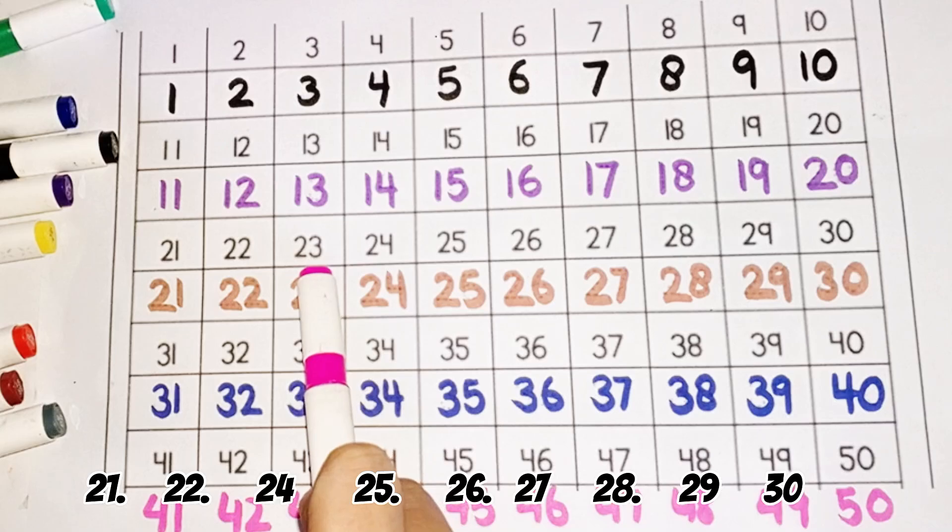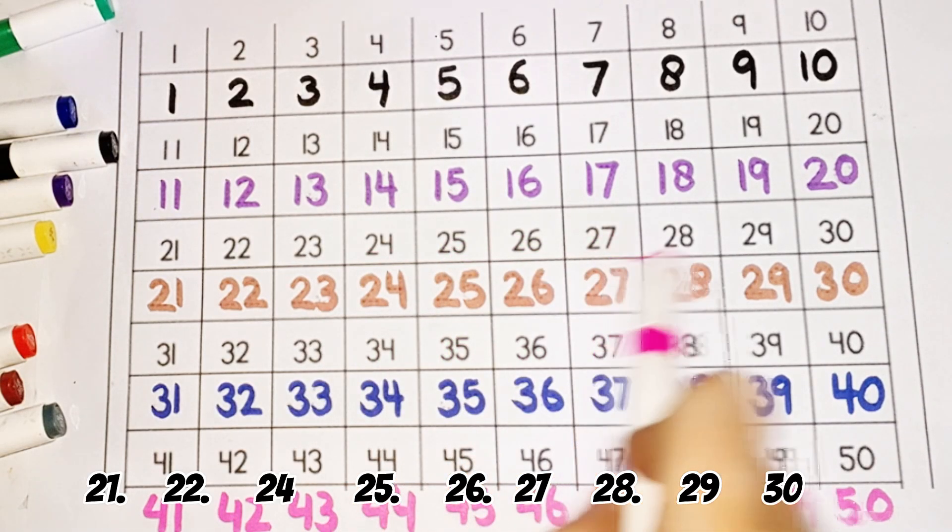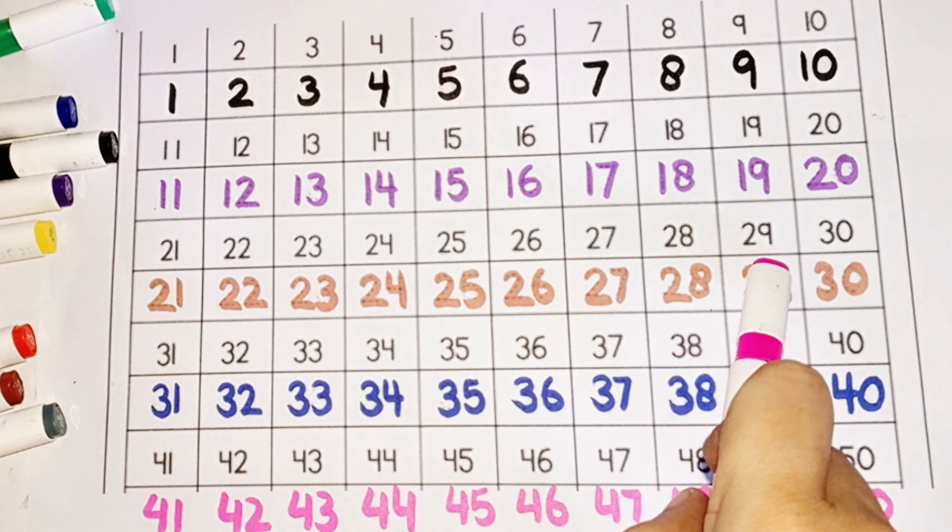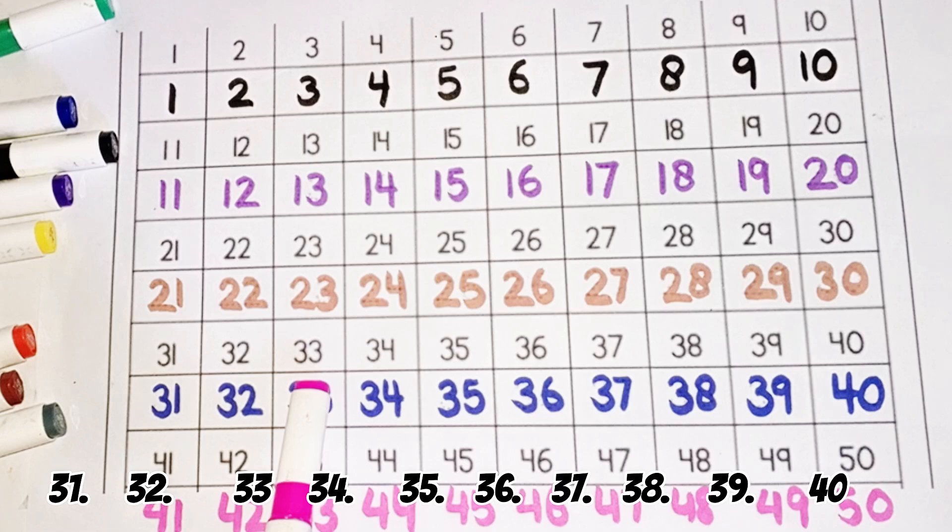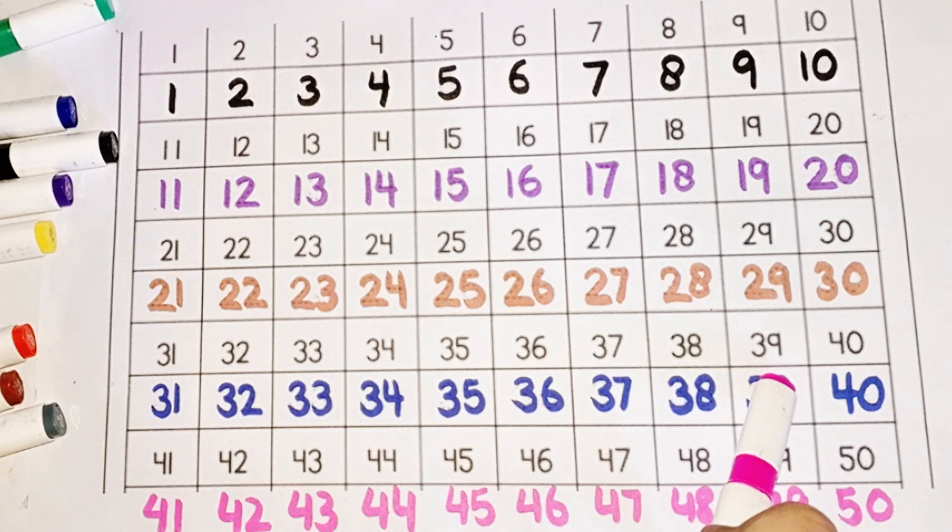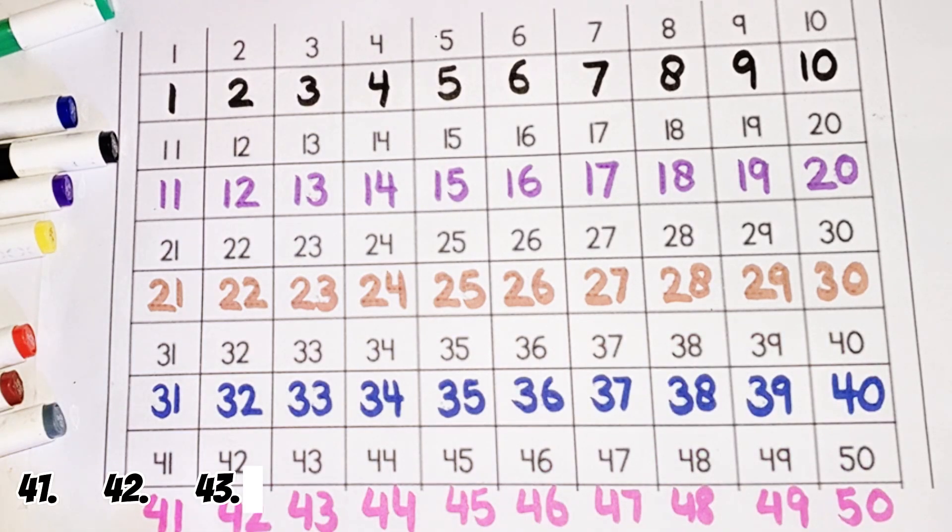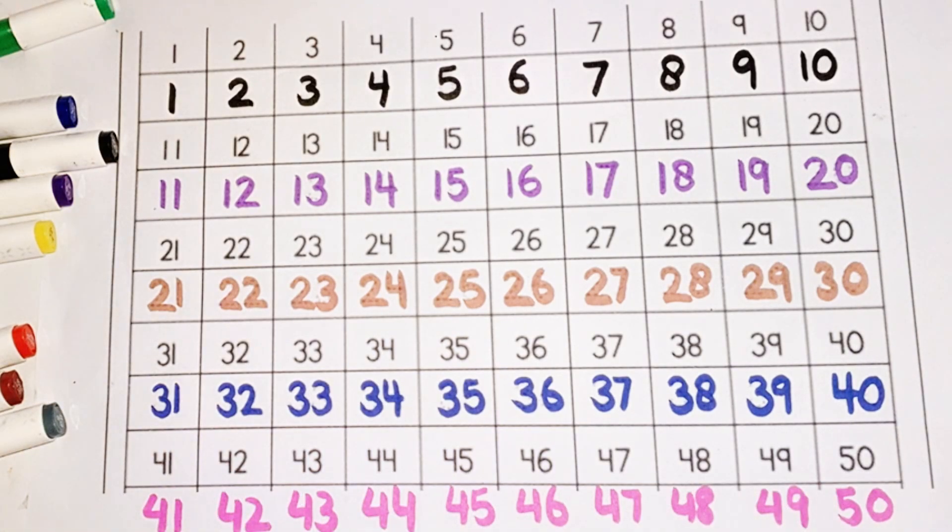Twenty-one, twenty-two, twenty-four, twenty-five, twenty-six, twenty-seven, twenty-eight, twenty-nine, thirty, thirty-one, thirty-two, thirty-three, thirty-four, thirty-five, thirty-six, thirty-seven, thirty-eight, thirty-nine, forty, forty-one, forty-two, forty-three, forty-four, forty-five, forty-six, forty-seven, forty-eight, forty-nine, fifty. Thank you.